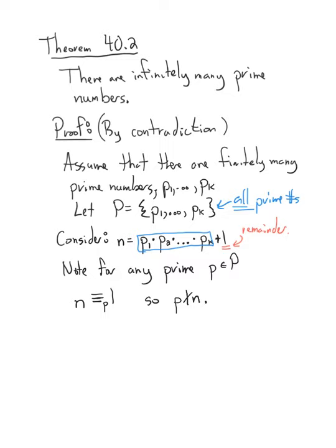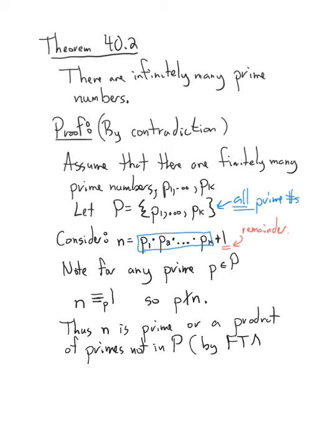So what does that mean? Well, it must mean, thus N is either prime or a product of primes not in P. And that's by the fundamental theorem of arithmetic. Any number N is a product of primes. So that's really cool.